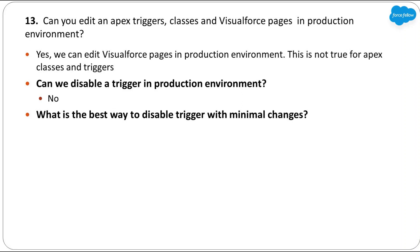The interviewer might then ask: what is the best way to disable a trigger in production with minimal changes? We have to redeploy the trigger after deactivating it in a lower org using deployment tools like Ant Migration Tool, Change Set, Workbench, or Salesforce CLI. However, this approach requires redeployment, which requires test cases and code coverage, and it's difficult to pass test cases without executing triggers. If we need to disable multiple or all triggers, redeploying all of them will be very difficult.